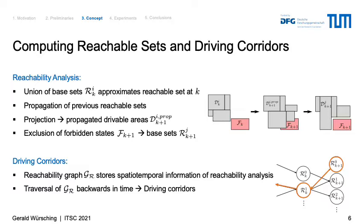Let us go into more detail on the reachability analysis itself. To compute the reachable sets, we successively carry out the following procedure. We approximate the reachable set at each time step k as the union of base sets. These base sets are propagated according to the vehicle dynamics model, yielding a propagated reachable set at time step k+1. Projecting that propagated reachable set onto the position domain gives the propagated drivable areas. These may overlap with the set of forbidden states — static obstacles or predicted dynamic obstacles. We exclude those forbidden states from the propagated drivable area to obtain the updated drivable area at k+1, and from that we derive the corresponding base sets at k+1.